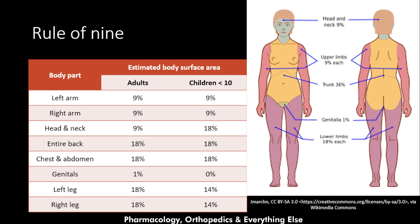In the rule of nine, each body part is given a percentage that is nine percent or a multiple of nine — either nine percent or 18 percent — which is why it is called the rule of nine. There are two different versions: one for adults and one for children less than 10 years old, and each body part has its own percentage of total body surface area.